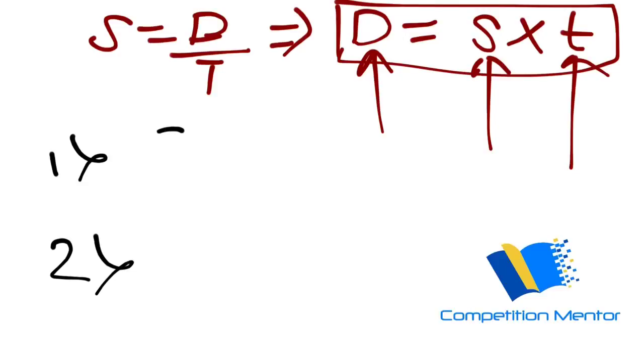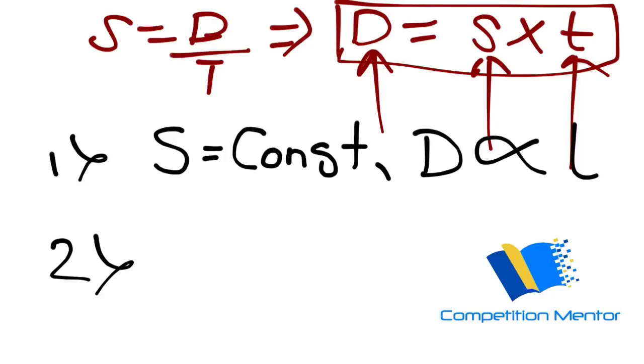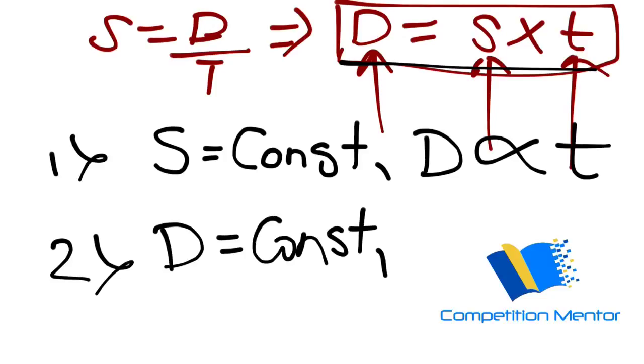So when speed is constant, what happens? When speed is constant, D becomes directly proportional to T, right? You can see it from here. And when D is constant, what happens? S becomes inversely proportional to T.